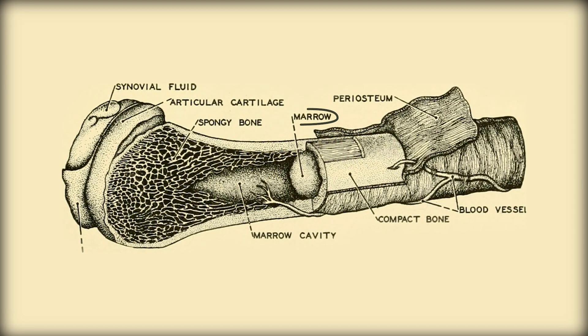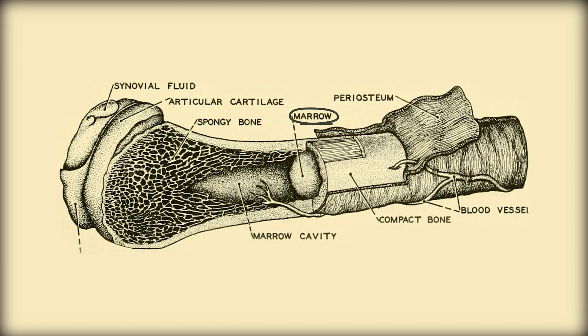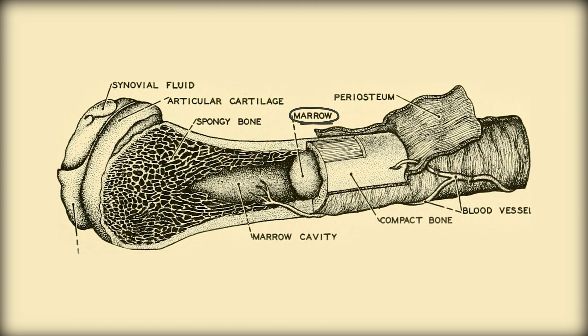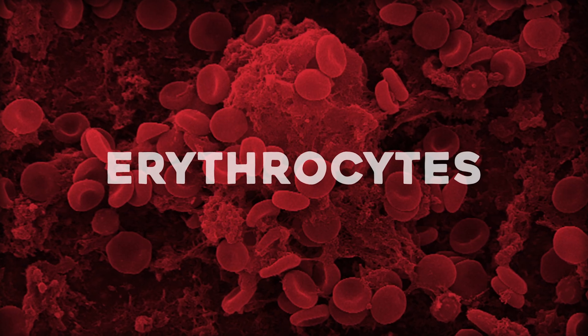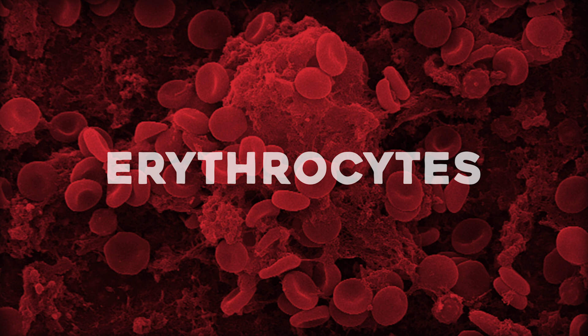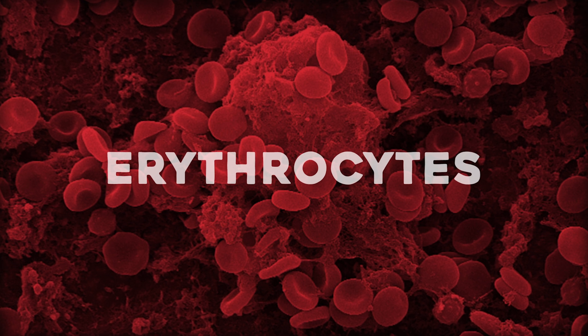You also have yellow marrow, which hangs out in the medullary cavity of the bone shaft and is mostly fat cells. Our bodies are constantly turning HSCs into blood cells because erythrocytes — mature red blood cells — don't have nuclei, so they don't divide or make copies of themselves through mitosis. By not having a nucleus and other organelles, erythrocytes can maximize how much hemoglobin they have and how much oxygen they can carry.